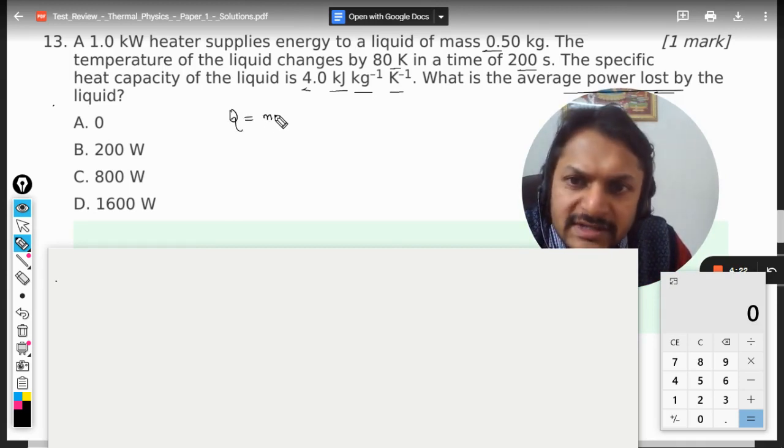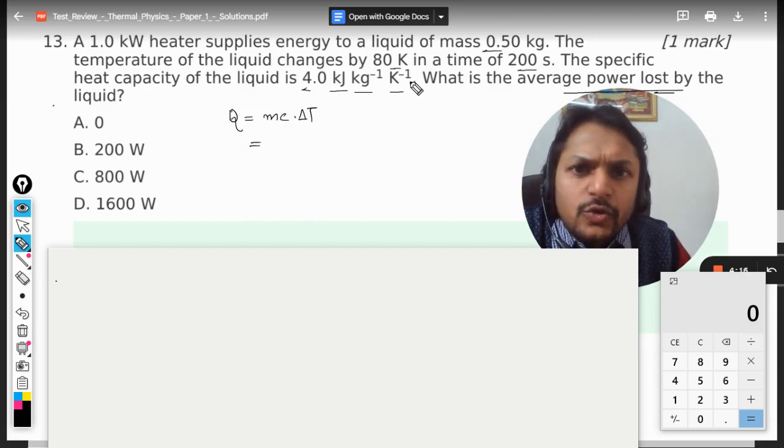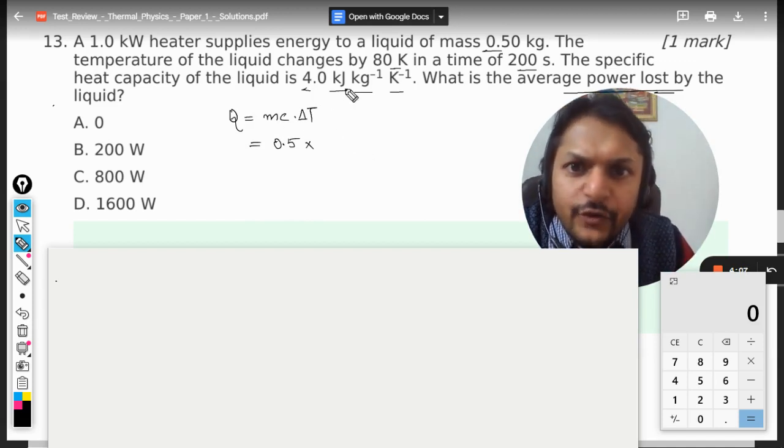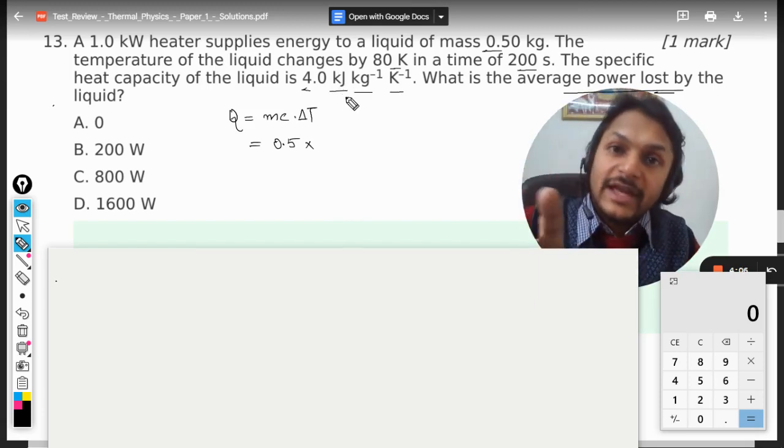We will say that Q = mc∆T. What is the mass? It is 0.5 kg. Be very careful - all the units should be in SI and c is 4 kilojoule.